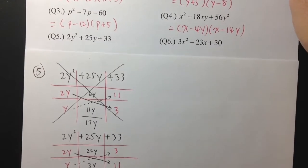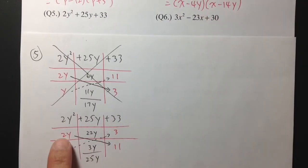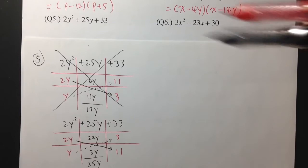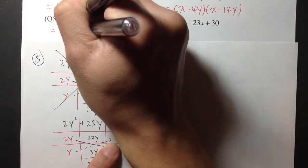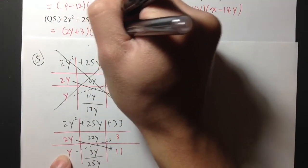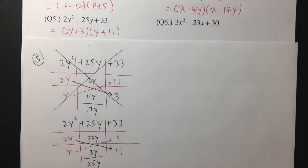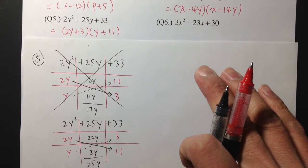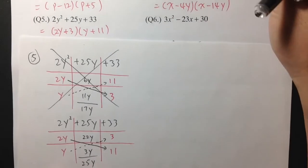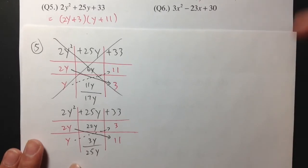We found our correct combination. To write the answer, we read it across: 2y plus 3, times y plus 11. So for number 5 the answer is (2y + 3)(y + 11). This method can be fast if we pick the right combinations right away. Sometimes you just have to practice these questions many times and you'll get used to it — you can master how to do the factoring. That's why I'm going over these questions with you. I hope you find them entertaining.